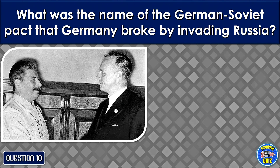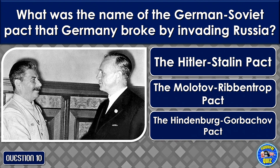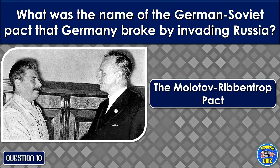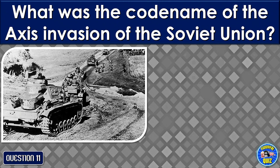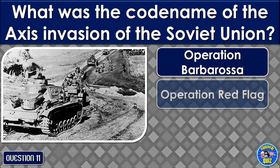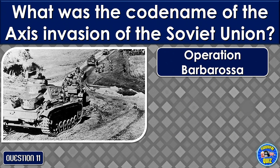What was the name of the German-Soviet pact that Germany broke by invading Russia? The Molotov-Ribbentrop Pact. What was the codename of the Axis invasion of the Soviet Union? Operation Barbarossa.